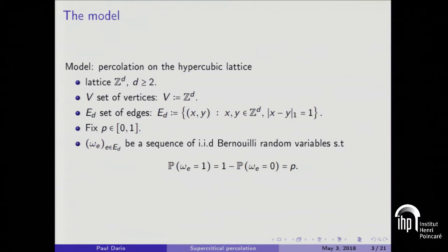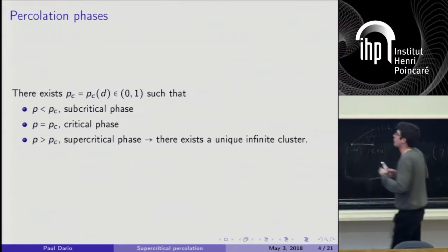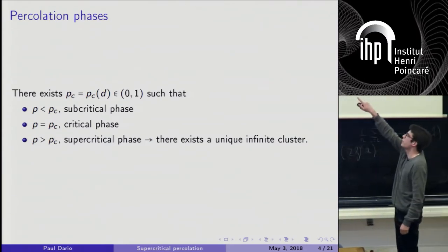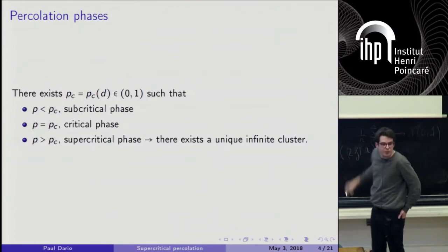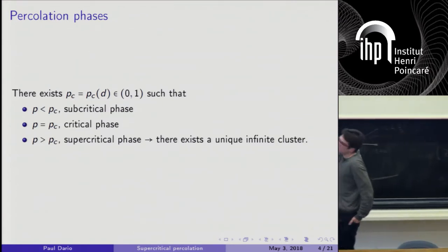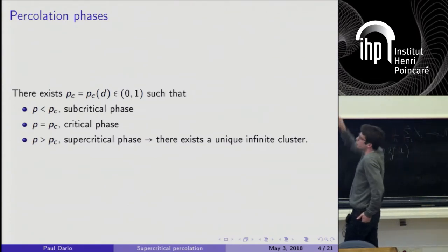This is straightforward. We have one parameter, which is this probability P, and we can split the model into three phases. The question is: does there exist an infinite connected component of closed edges — edges such that omega-e equals 1? We can prove that there is a critical parameter Pc, strictly between 0 and 1, such that if P is below Pc there is no infinite cluster, and if P is larger than Pc, there is one.